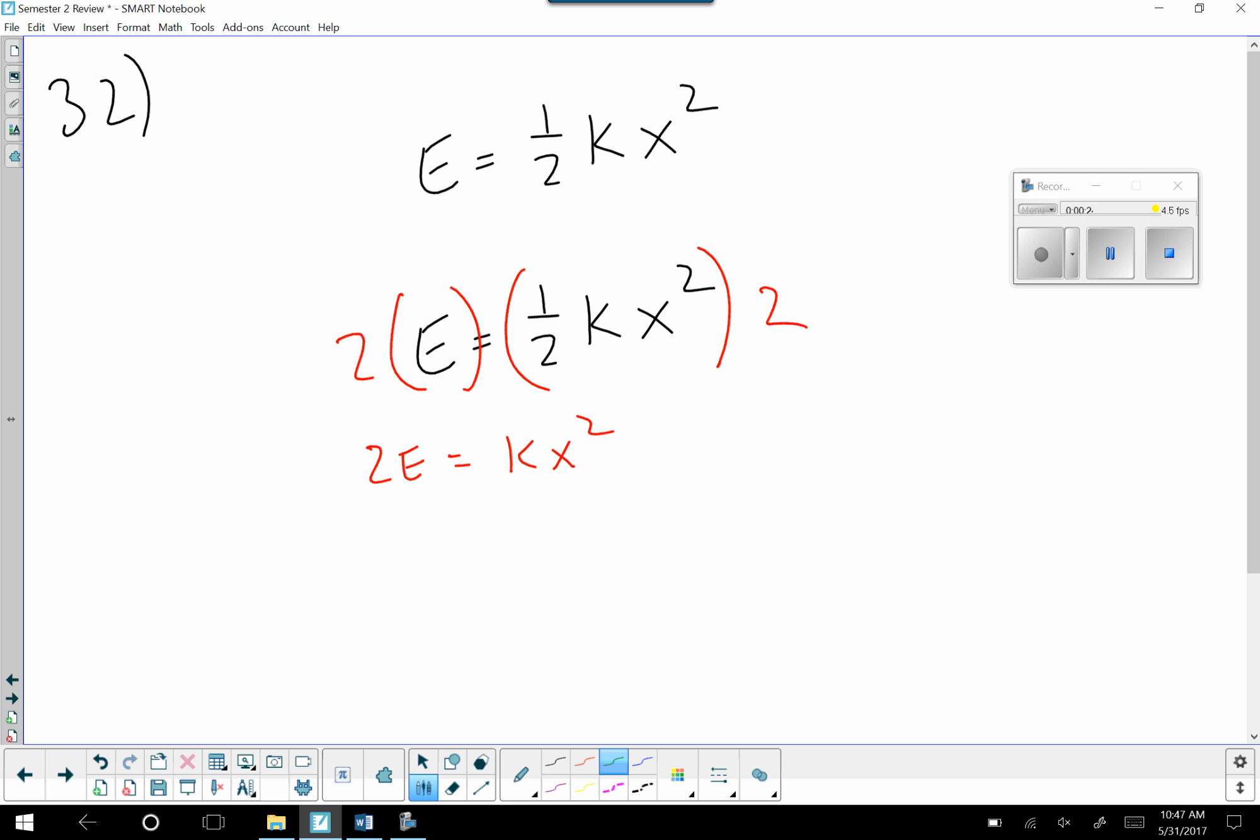What am I going to do next? I'm going to get rid of that k by dividing both sides by k. Okay, so 2e divided by k equals x squared. And then what are we going to do?